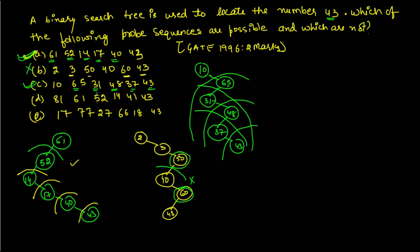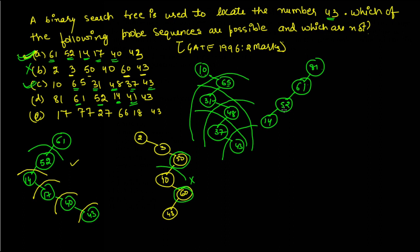In option D, the root contains 81, then 61 is less than 81 and goes left, then 52 is less than 61, then 41 is less than 81, less than 61, less than 52 and greater than 14 so it goes to the right, and then 43 goes to the right. This complete sequence is correct.